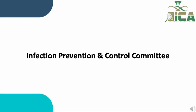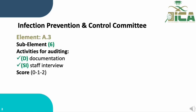In the name of Allah, the merciful. We are still in domain A, and our next element is A.3: Infection Prevention and Control Committee. The total number of elements is 6, and the activity for auditing is document review and staff interview. The score will be 0, 1, or 2.